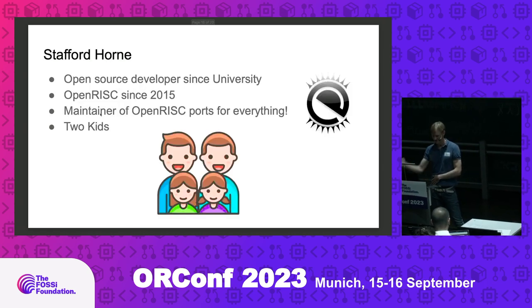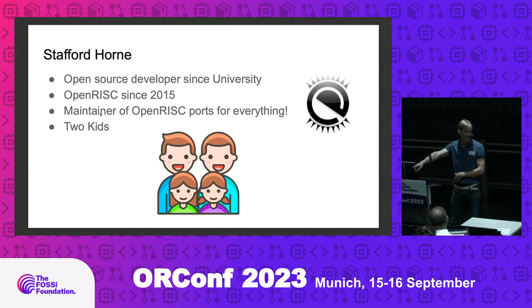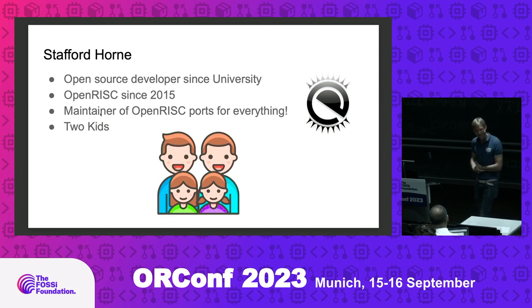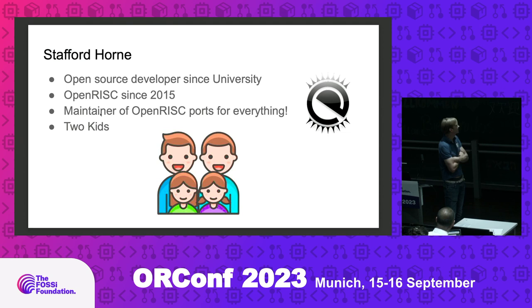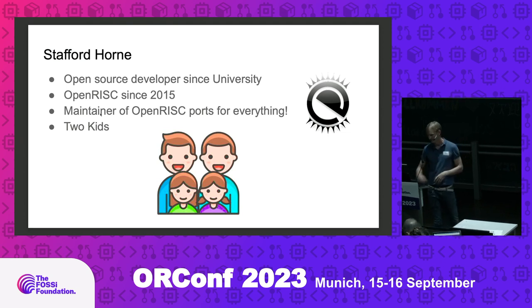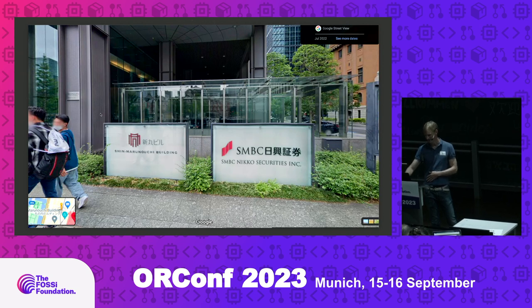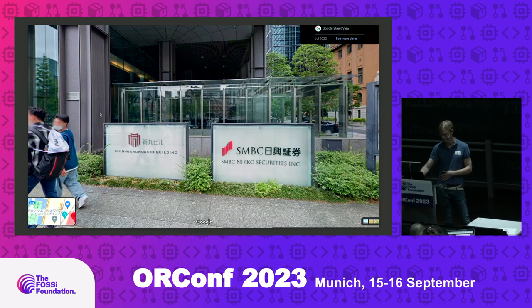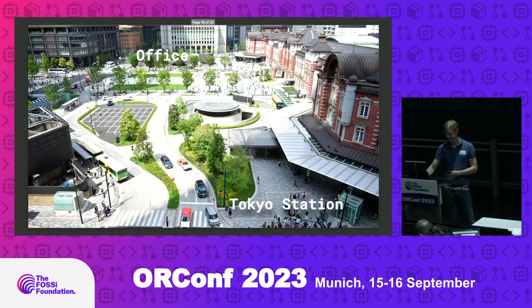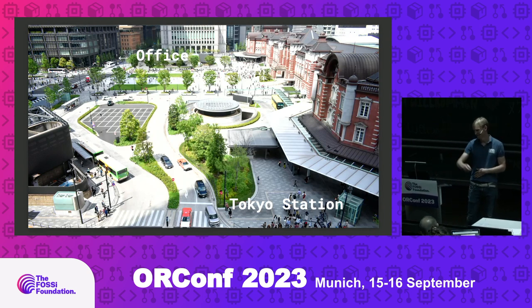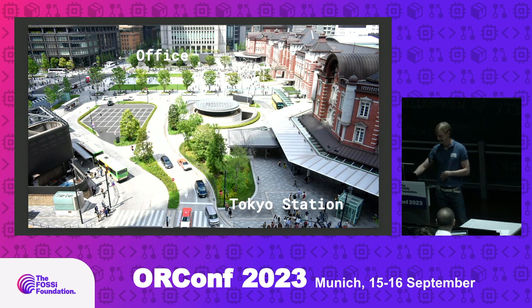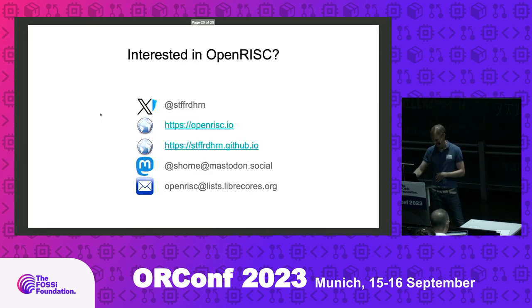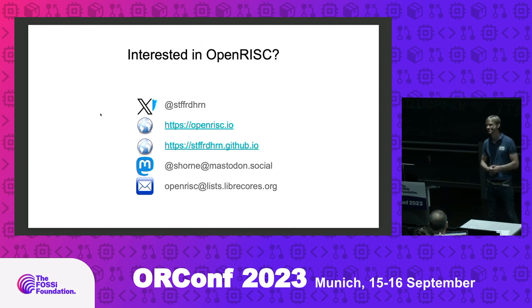Just a note about me: I have kids. I started off working — does anyone know this icon on the right? This is Enlightenment, a window manager for Linux, one of the old ones from the Red Hat 6 days. I started working on that in university. I work in Japan and actually live in London — this is my office in Japan at SMBC Nikko, right across the street from Tokyo Station. There are a lot of tourists coming into Tokyo since they opened up. I also like rock climbing a lot, and that's me.